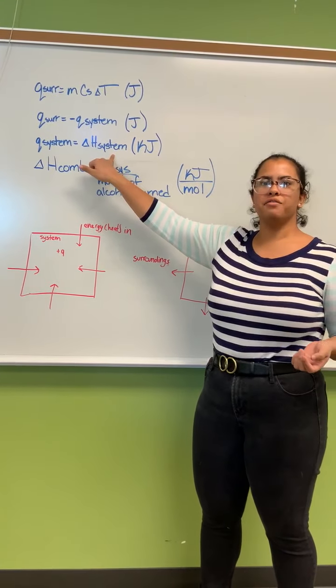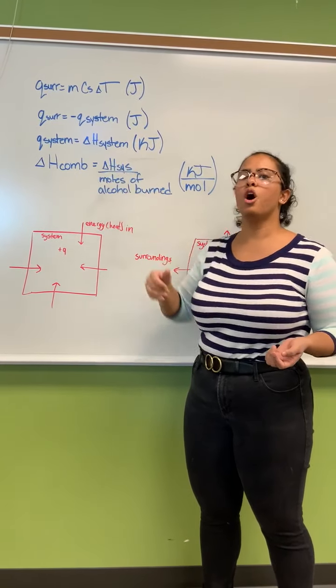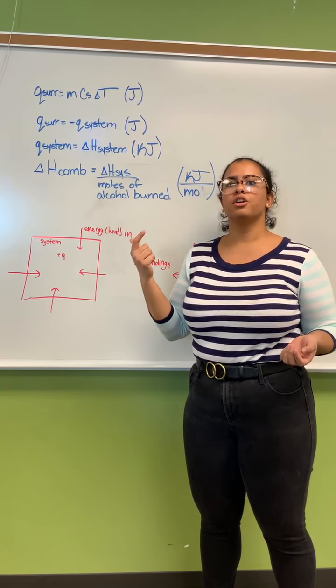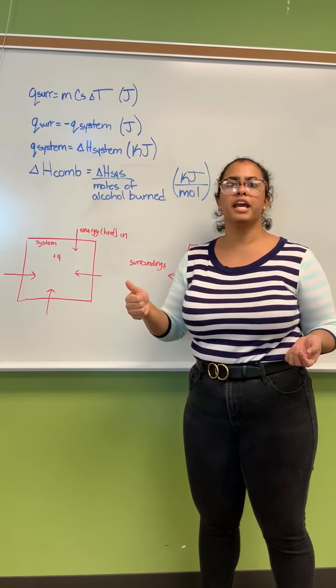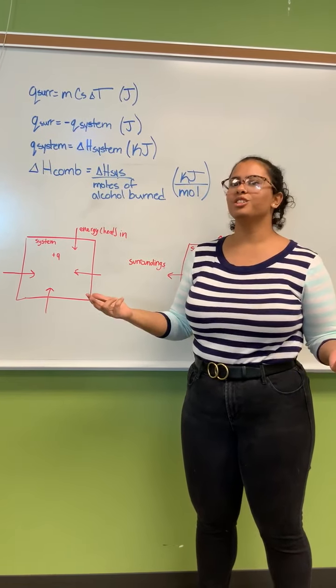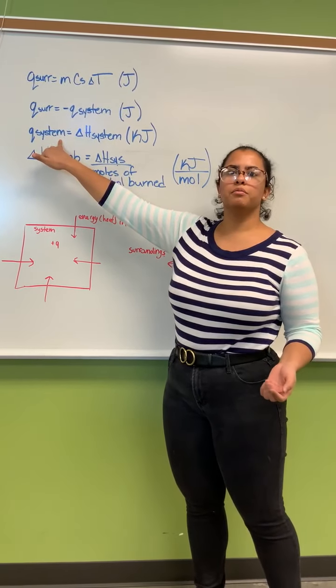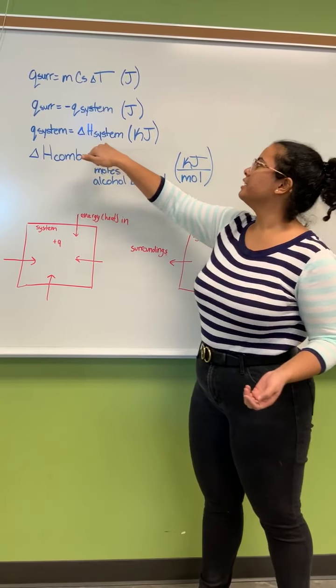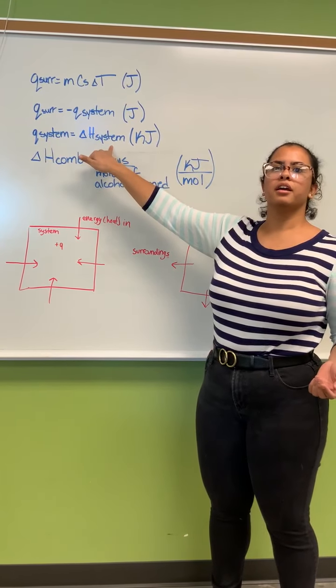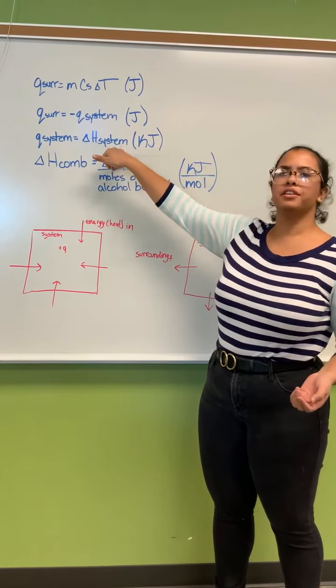So you have opposite signs, and then we have that the heat of the system is exactly the same as the enthalpy of the system because there was no pressure change or volume change - since those are constant, no work has been done. Therefore q of the system, which is the alcohol, equals ΔH, the change of enthalpy of the system.